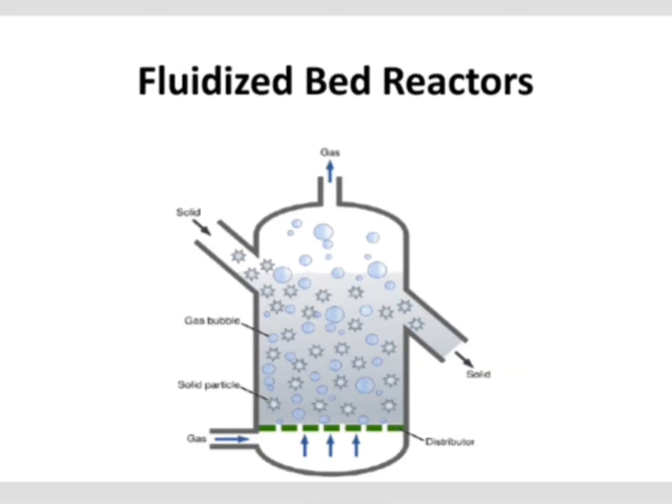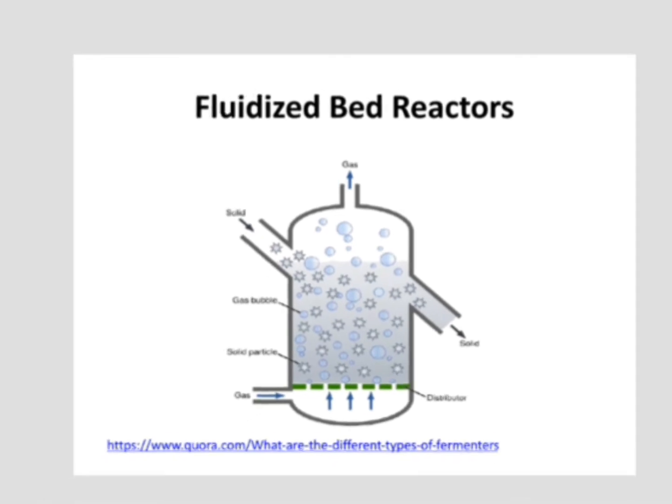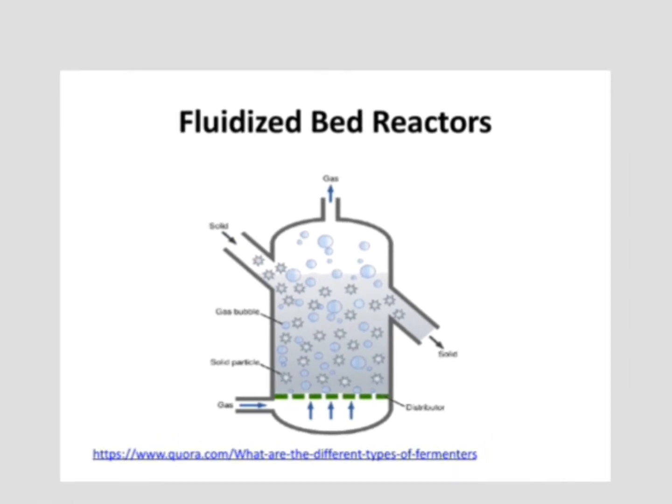This is the diagram of the fluidized bed reactor. Gas is fed into the reactor from the lower side through a perforated plate sparger, and moves upward into the fermenter, with excess gas exiting from the top. Note: in the diagram the solid appears to be exiting, but it should be marked as liquid — the liquid is eluted from the fermenter, while the solid is retained in the fluidized bed reactor.